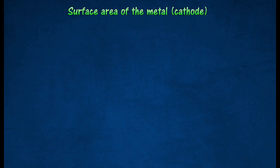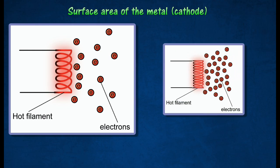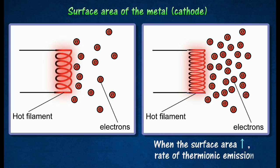When the surface area increases, the rate of thermionic emission increases. A larger surface area allows more electrons to be emitted.